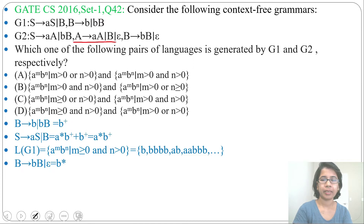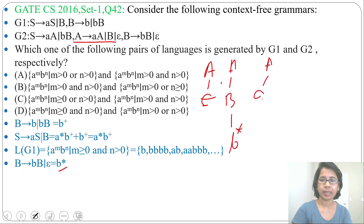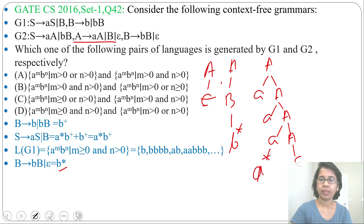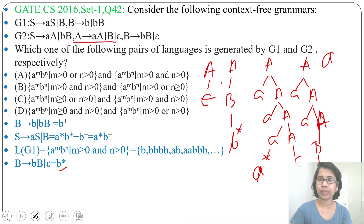From A, what can you generate? From A you can generate epsilon. Then from A you can generate B, and from B you can generate B Kleene closure. Then from A you can generate AA, then AA again, and from A you can generate epsilon. So you can generate A Kleene closure. You can also generate A Kleene closure followed by B Kleene closure when combining both derivations AA and B.